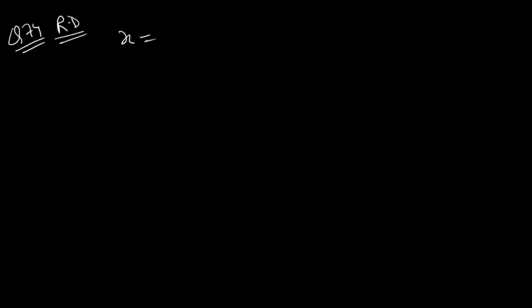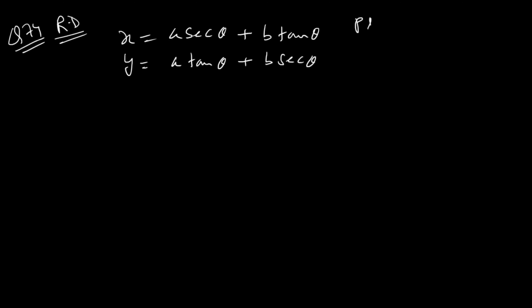Question 74, RD Sharma. x equals to a·sec θ plus b·tan θ, and y equals to a·tan θ plus b·sec θ. हमें proof करना है x² minus y² equals to a² minus b².